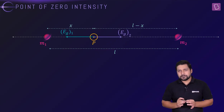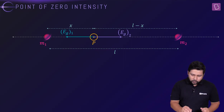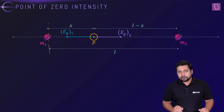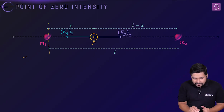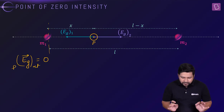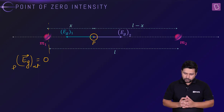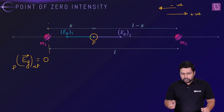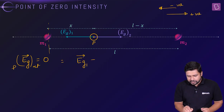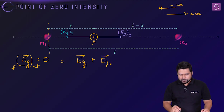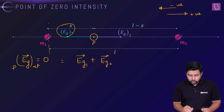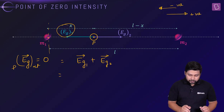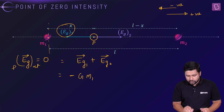All we have to do is write the net field equal to 0. If this is the neutral point at a distance x from mass M1, then the net value EG must be equal to 0 at point P. Let's define the direction: this direction is positive, the other is negative. The net is the vector sum EG1 plus EG2. EG1 is in the negative direction, so at a distance x from M1, the gravitational field intensity due to the first mass is minus G·M1 divided by x squared.